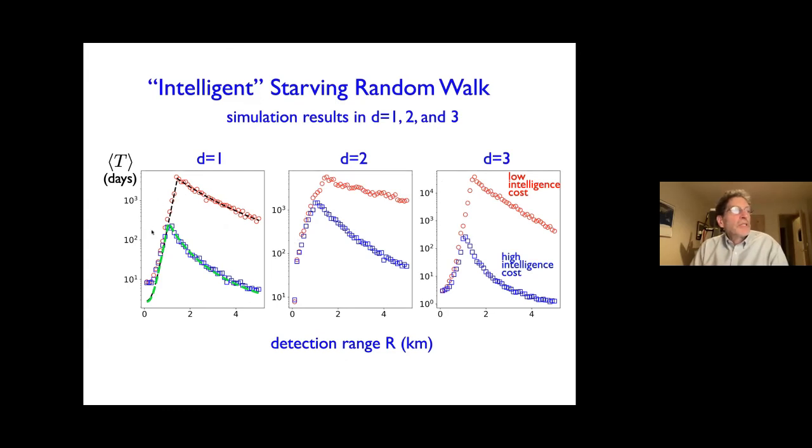And so I'm now showing you simulation data in one dimension, two dimensions, and three dimensions. And the other feature of these plots is there's this notion of low intelligence cost and high intelligence cost. So one basic feature in our model of how we parameterize it is that you have a basal metabolism rate plus an additional cost due to your intelligence. So the coefficient of that additional cost is what is sort of demarcating these two different types of behaviors. High intelligence cost means that, you know, you spend more on your brain compared to a low intelligence cost animal, and so the lifetime should be smaller. But nevertheless, there is a robust maximum as a function of the detection range.